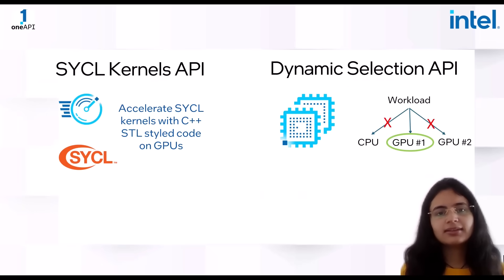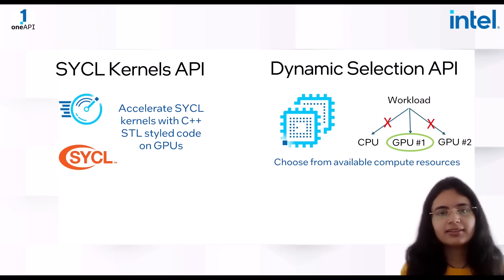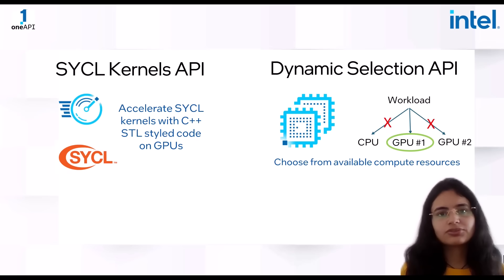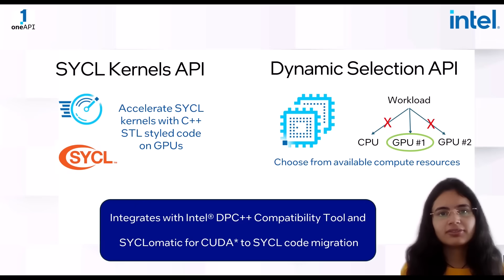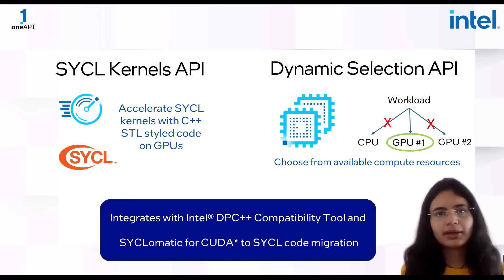The SYCL Kernels API of OneDPL helps accelerate SYCL kernels for C++ STL-styled parallel coding on GPUs, while the latest feature of Dynamic Selection API gives you freedom to choose compute resources for your workload. OneDPL easily integrates with the OneAPI-powered tools for automated CUDA to SYCL code migration, enabling cross-vendor programming.